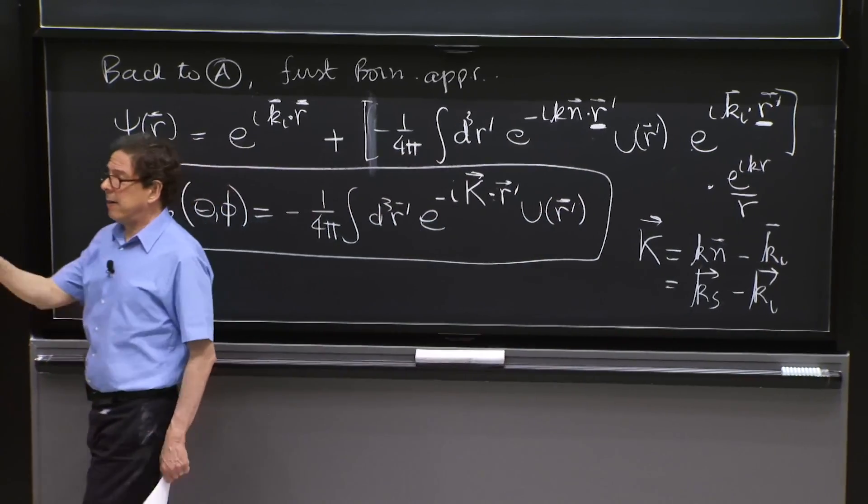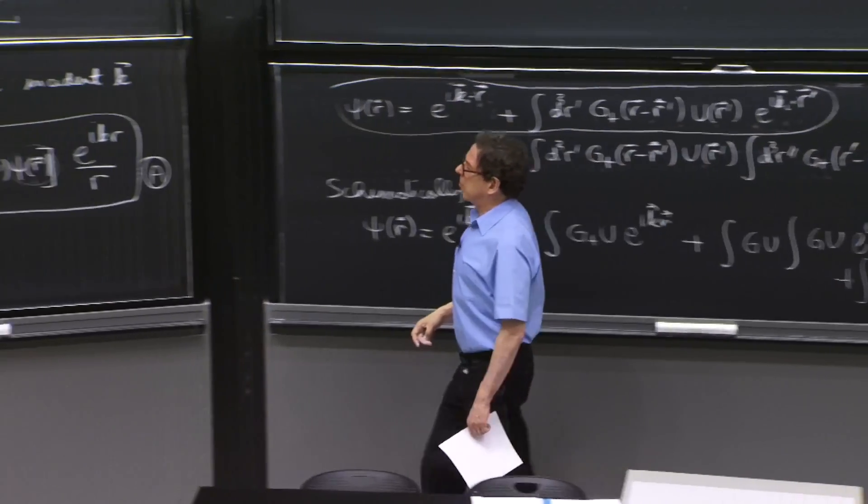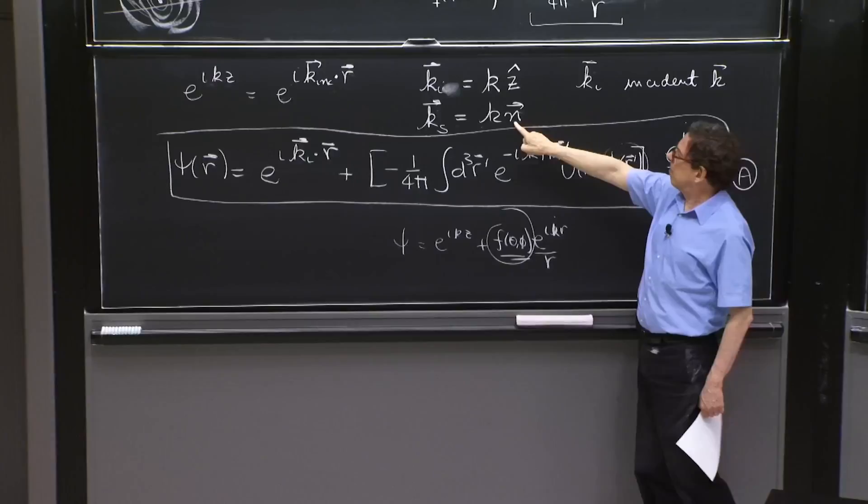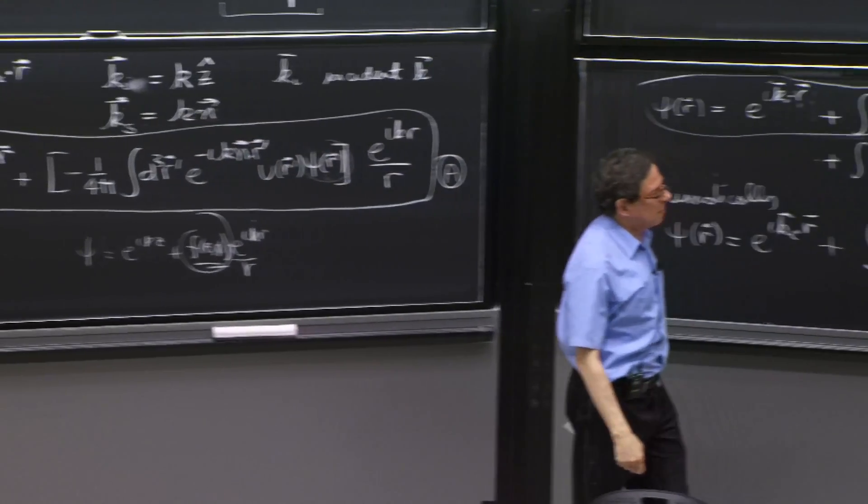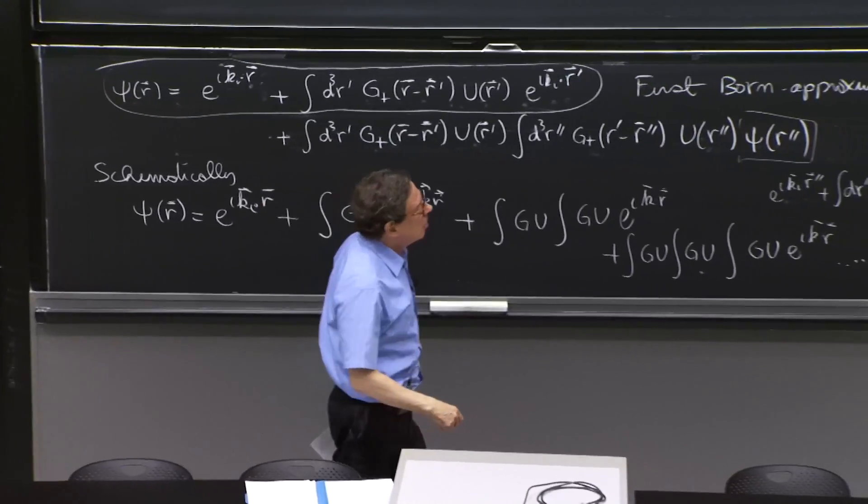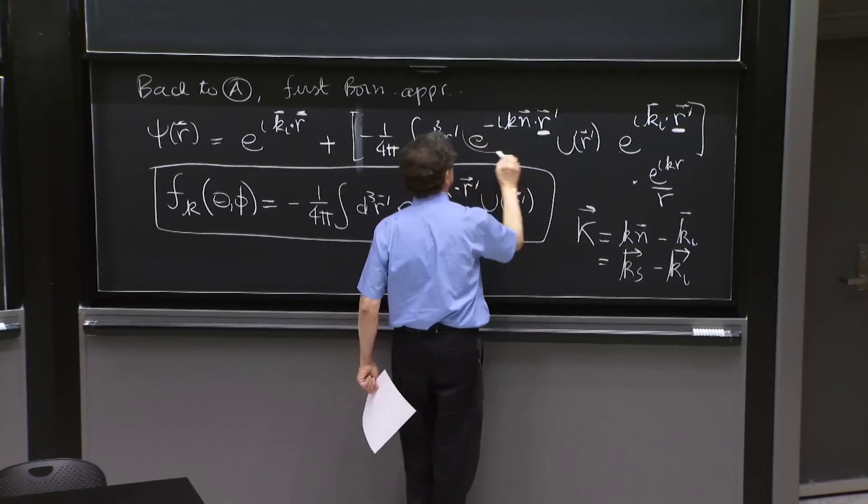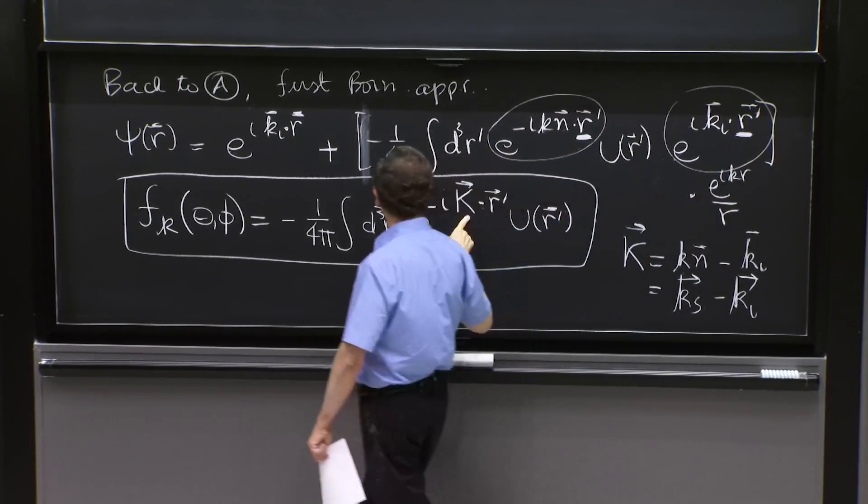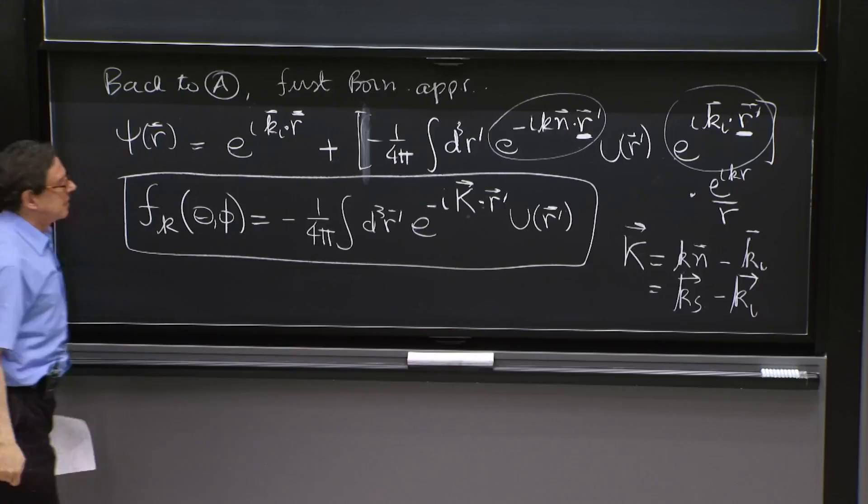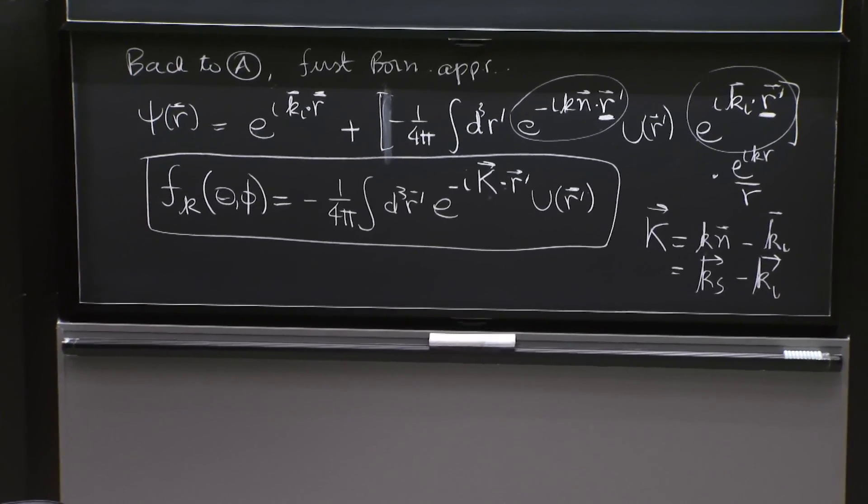Remember, we defined there on that blackboard the scattered momentum as k times the direction of observation, that unit vector. So in combining these two exponentials into a single one, we have this capital K vector that is a pretty important vector. And now, this is a nice formula.